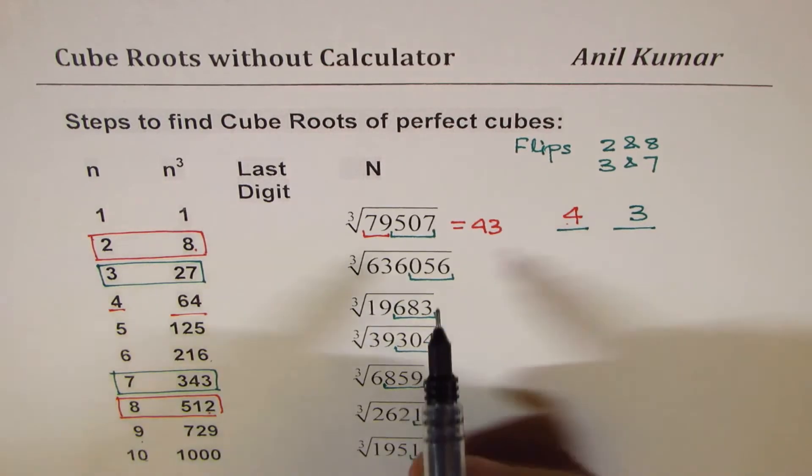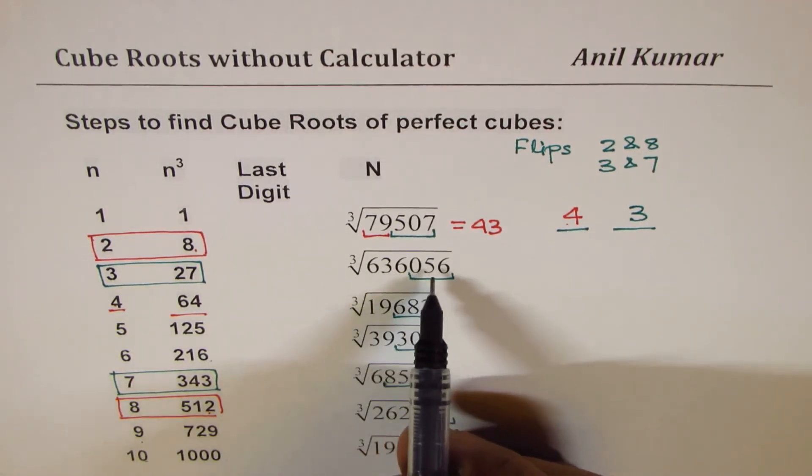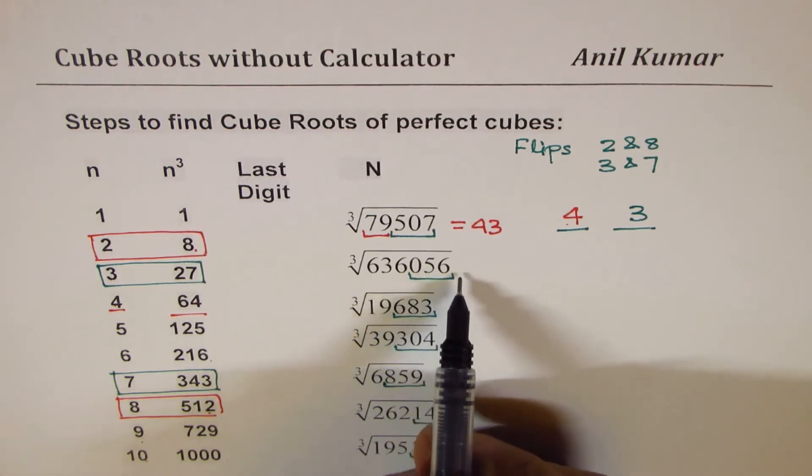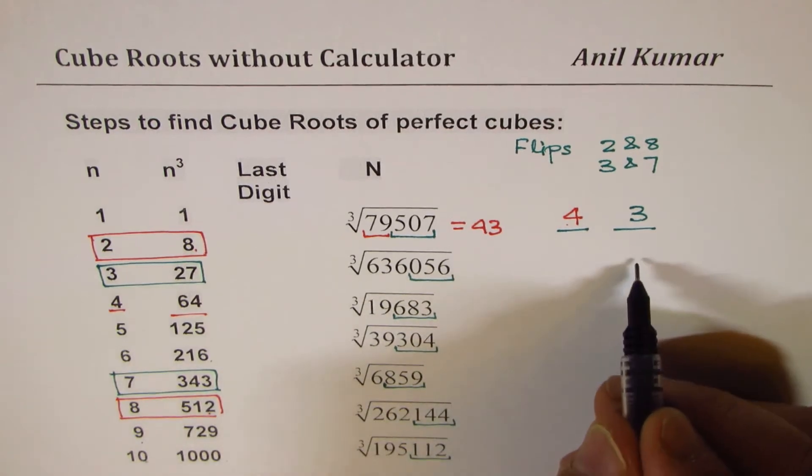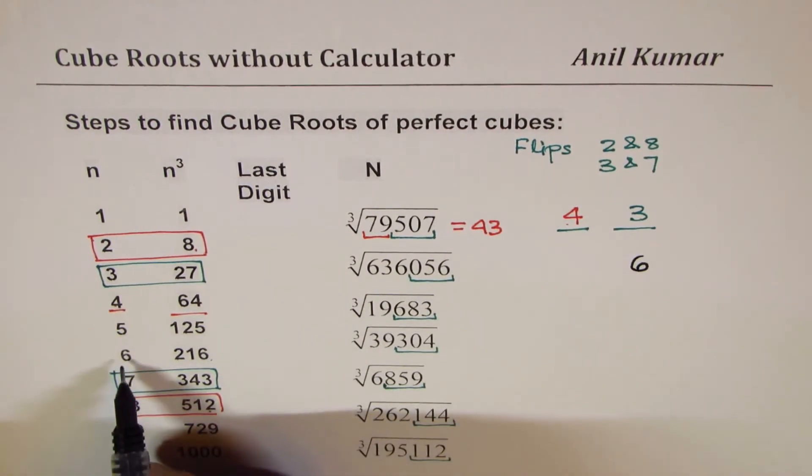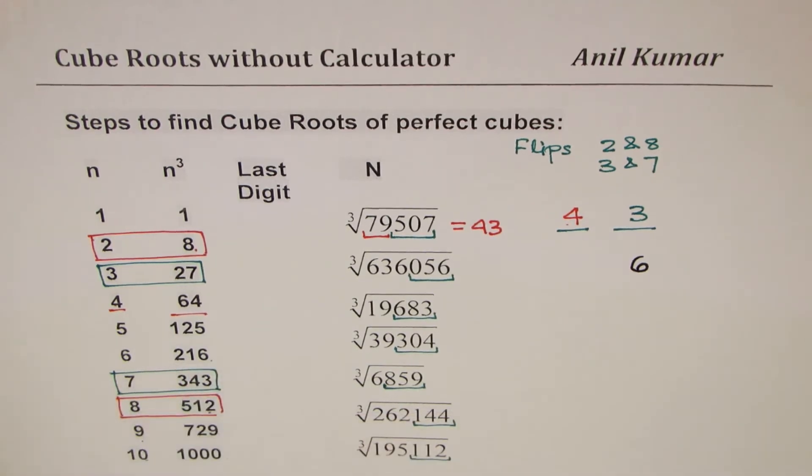Let's do it once again. The second example here is 636056. We have divided this number into two groups. 056 is my first group from the right. Last digit is 6 and therefore my ones number is also 6, since 6 cubed is 216 ending with 6.